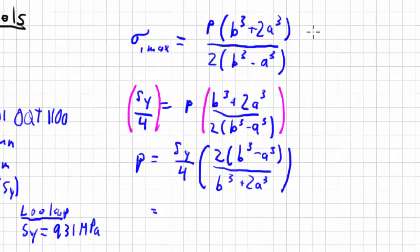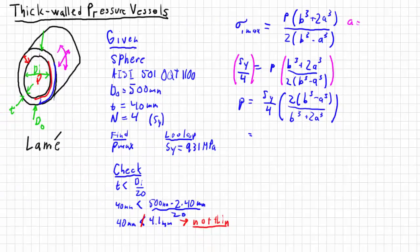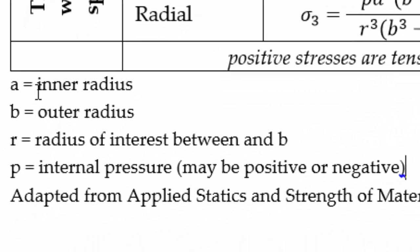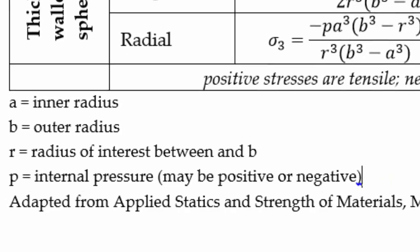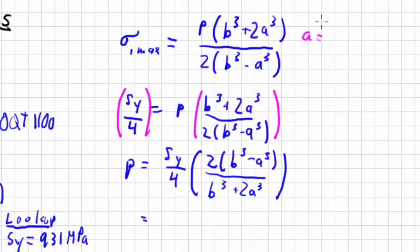Those are fairly easy to calculate. A is, if you remember, the inner radius. B is the outer radius. The inner radius is going to be half the outer diameter minus the thickness. Half the outer diameter is the outer radius, which is going to be 250 millimeters. Then subtract the wall thickness, which is 40 millimeters. So that'll be 210 millimeters. B is easy. It's the outer radius, 250 millimeters.